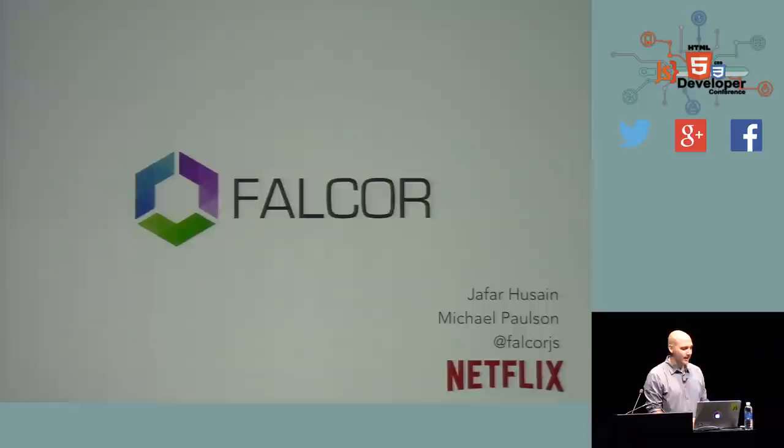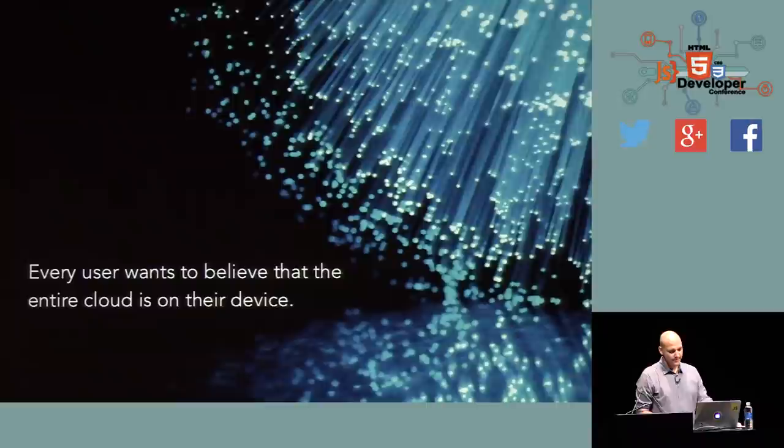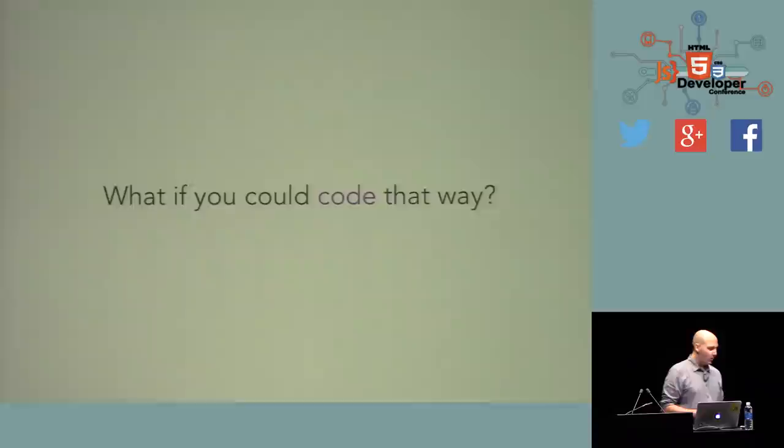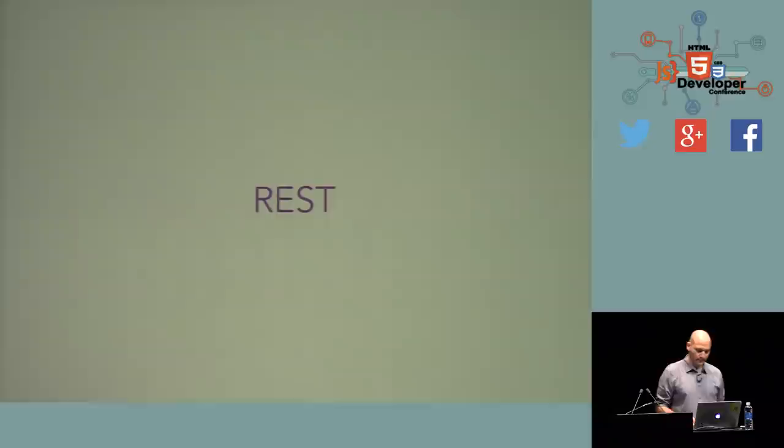Hi everybody. My name's Jafar Hussain. I'm here to talk to you about a framework that we've developed here at Netflix called Falcor. I'm going to start off by pointing out what web developers mostly know: every user wants to believe that all the data out there on the cloud is sitting right there on their device. What if we could code as if all the data on the network were just sitting there on the device, waiting to be accessed like an in-memory JSON object?